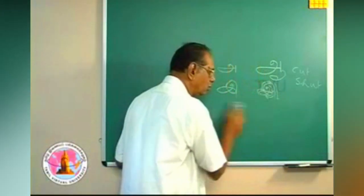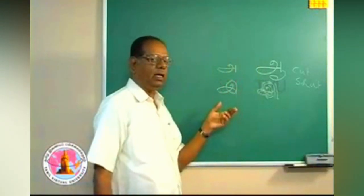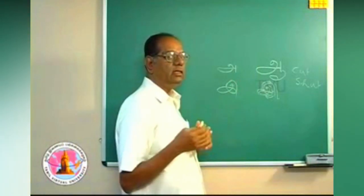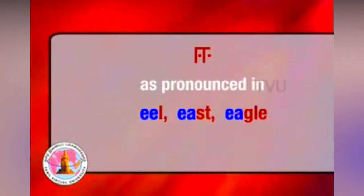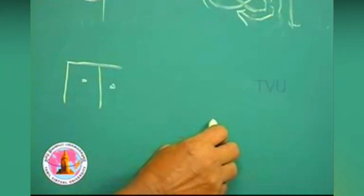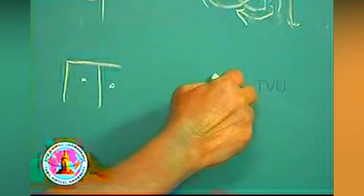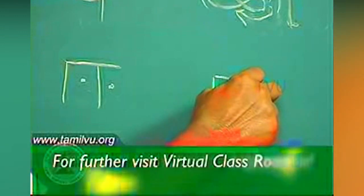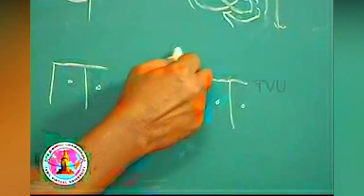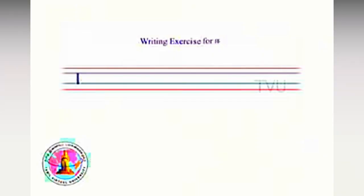We move on to the fourth letter, which is nothing but an elongation of 'இ'. That is 'ஈ' (long ī), as pronounced in 'eel'. It is written as two vertical lines with two dots — one in the middle and the other outside. You draw a vertical line from bottom to top, stretch it horizontally, then another vertical line from top to bottom with two dots, one inside and the other outside. This is 'ஈ' — the fourth letter. Now you have to practice it.